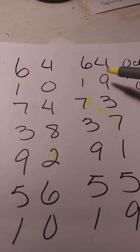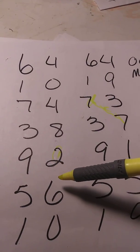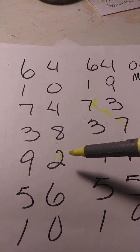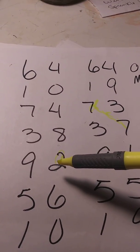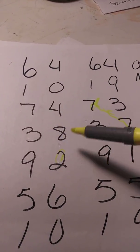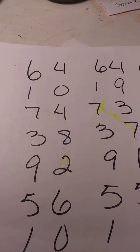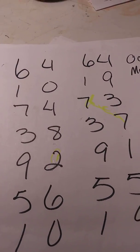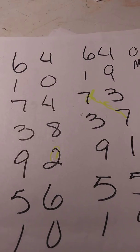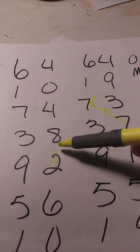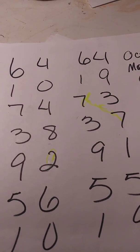A good number that might play today would be 3-3-9-4. A good number would also be 2-4-3-8 — that'd be a great number to play. And 2-8-7-4 would be a good number to play today.